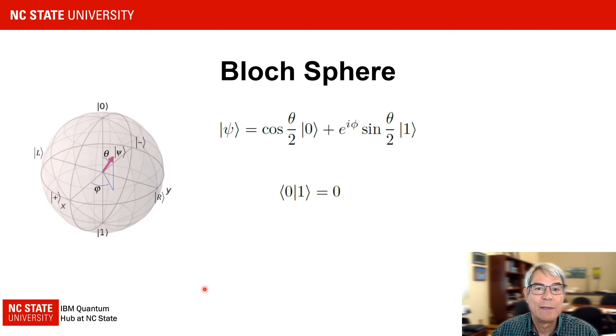If we were talking about normal vectors in a 3D space, zero would be represented by a unit vector pointing along the plus z axis and one would be represented by a unit vector pointing along the minus z axis. So, in terms of classical vectors, the inner product would simply be the dot product, which is not zero. So it's important to keep in mind that this is simply a visualization tool. It is not an accurate depiction of the state vector in a conventional Cartesian vector space.